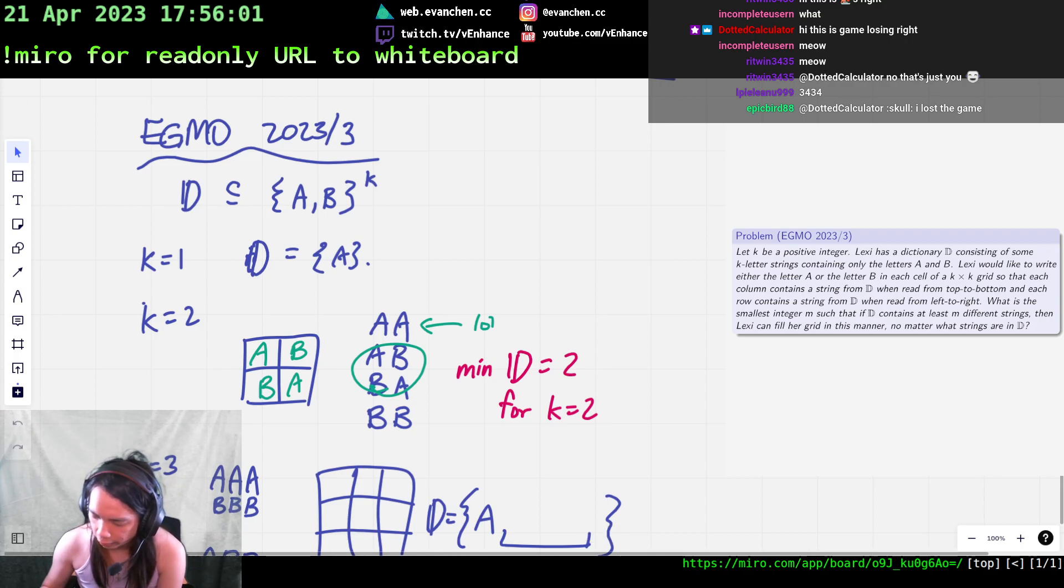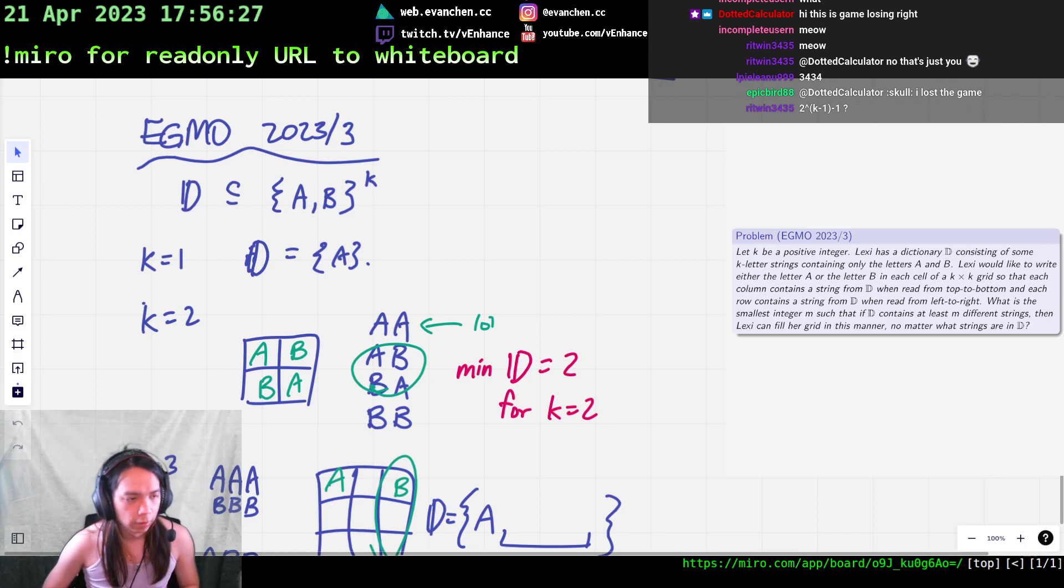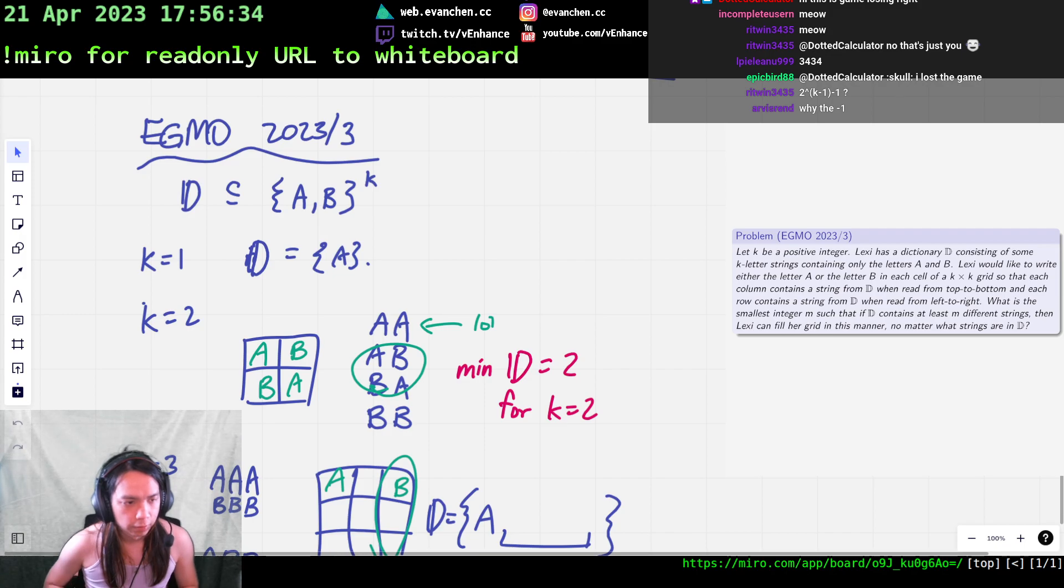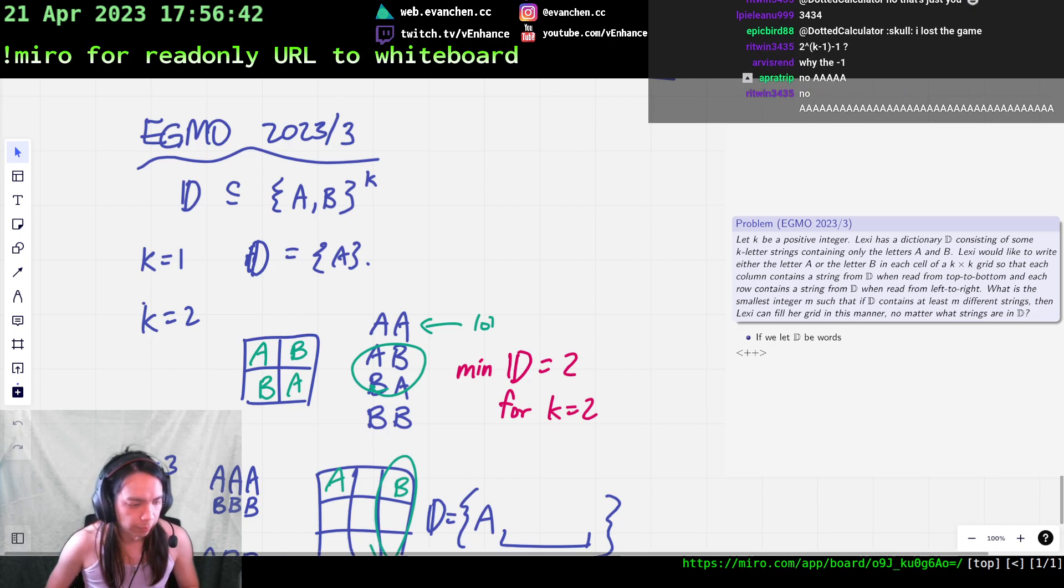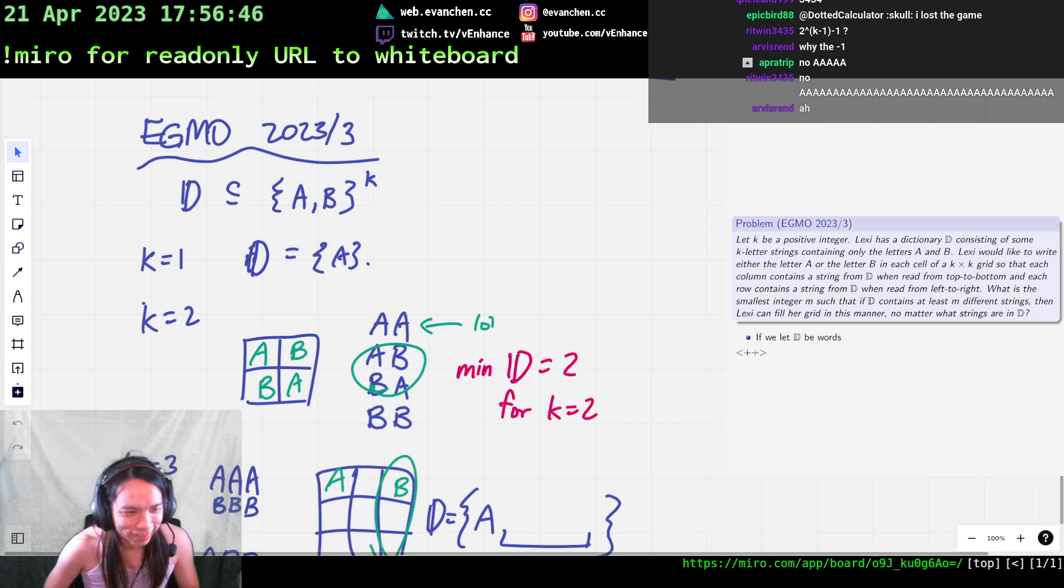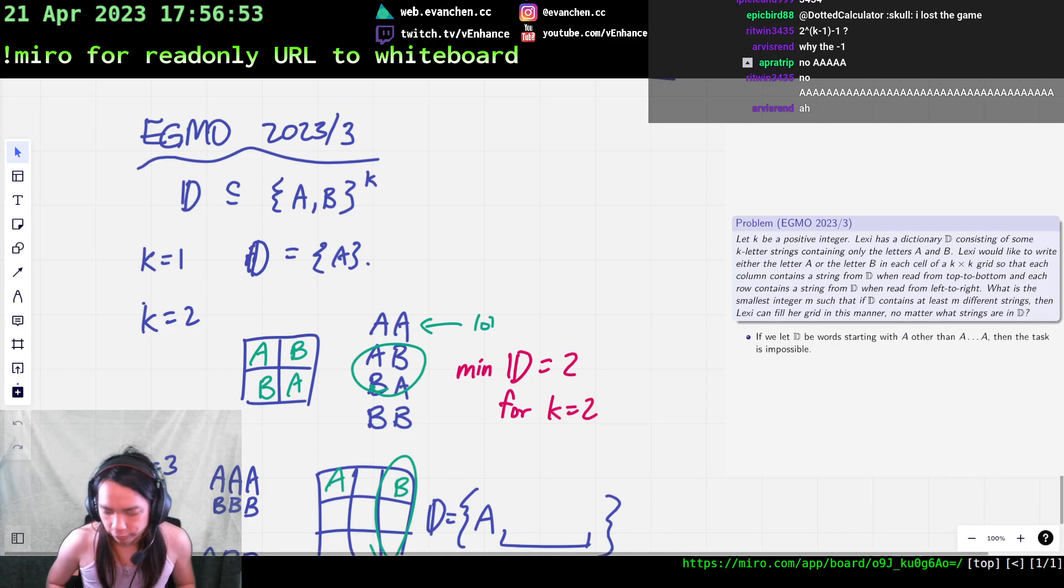If I let D equal this, this is like about a quarter of the possible words, then there's like obviously no construction because actually I can probably do better than that, right? If I take D to be the set of words that start with A, other than the all-A string, then there's no way to fill in the grid because you know whatever word you put in the top row has like AB somewhere in it, and then that thing will require—you know, if all your words start with A you can't fill it in.